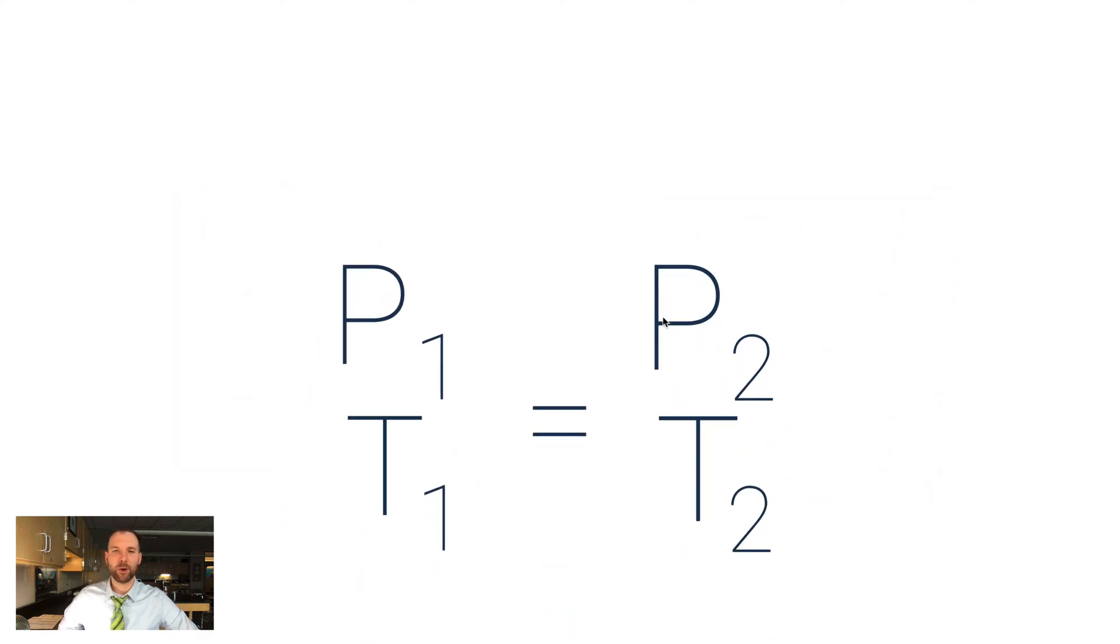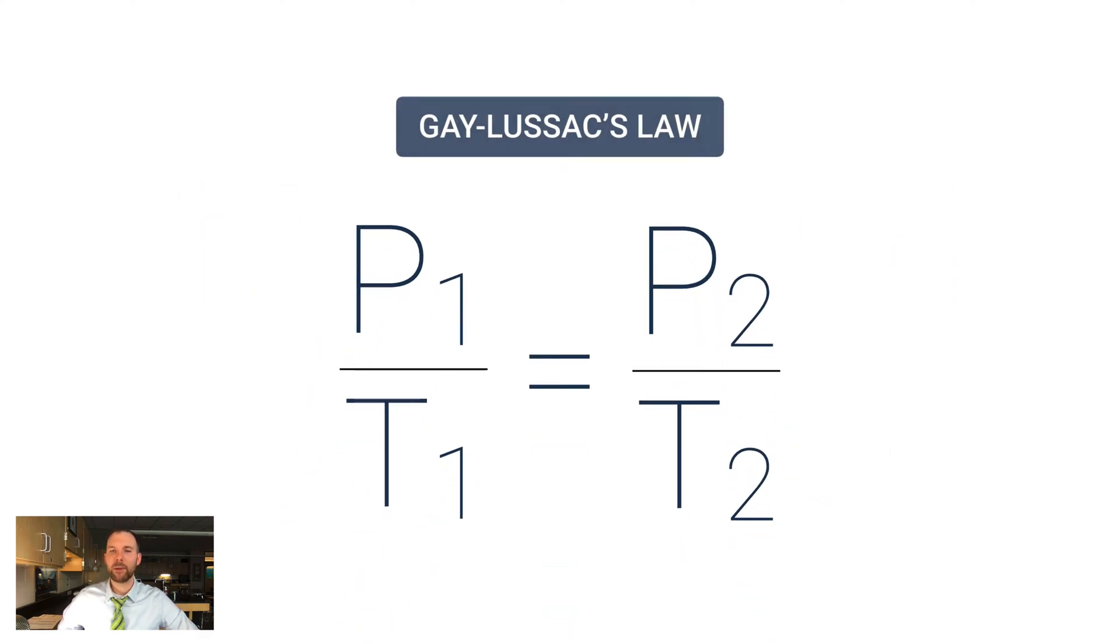And how do I represent this algebraically? It's like this: P1 over T1 equals P2 over T2. Now again, the one and the two just represent the different situations of the same gas sample, so you can think of this like it's a before and this like it's an after.